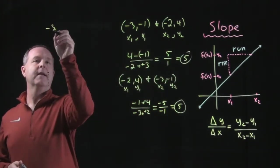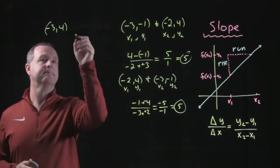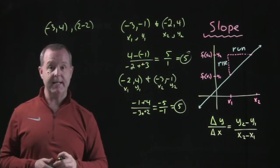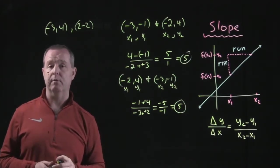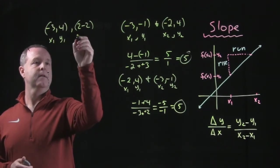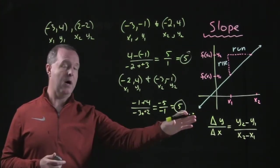Let's look at one more. Negative 3 and 4 and 2 and negative 2. Which ones do you want to designate as your first and second coordinate points? All right, I heard you.